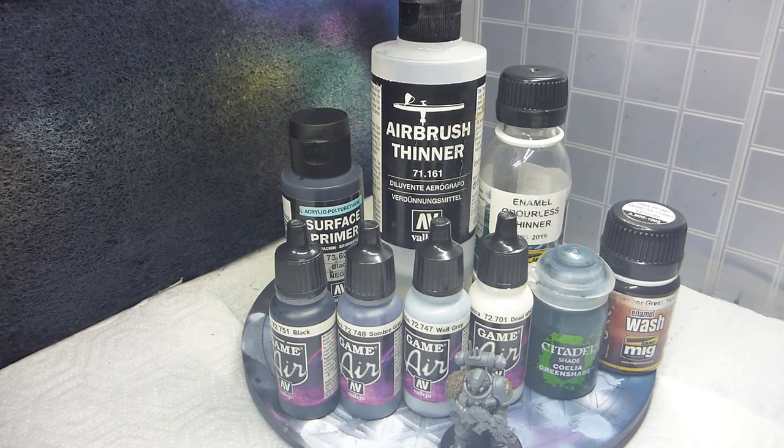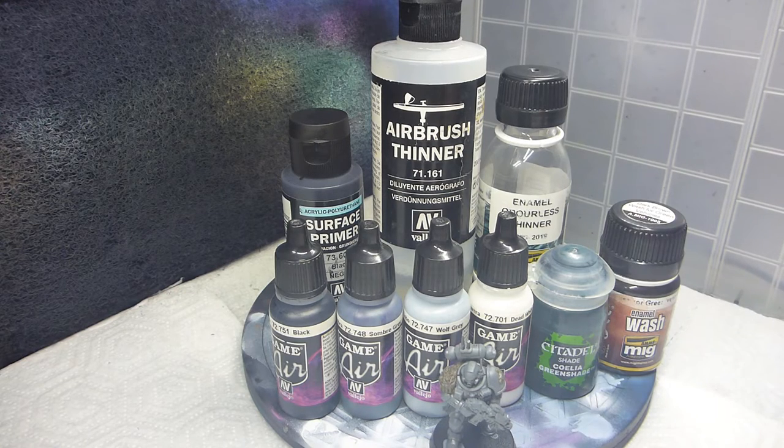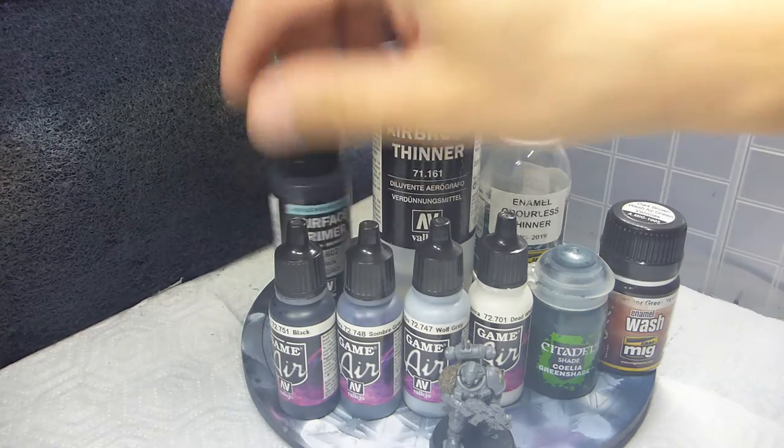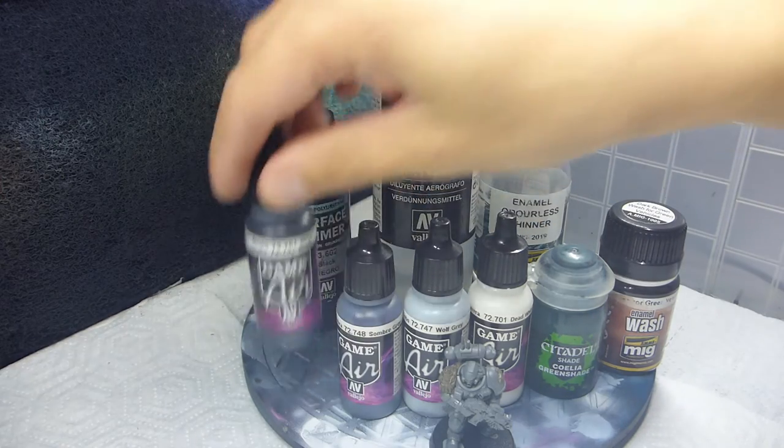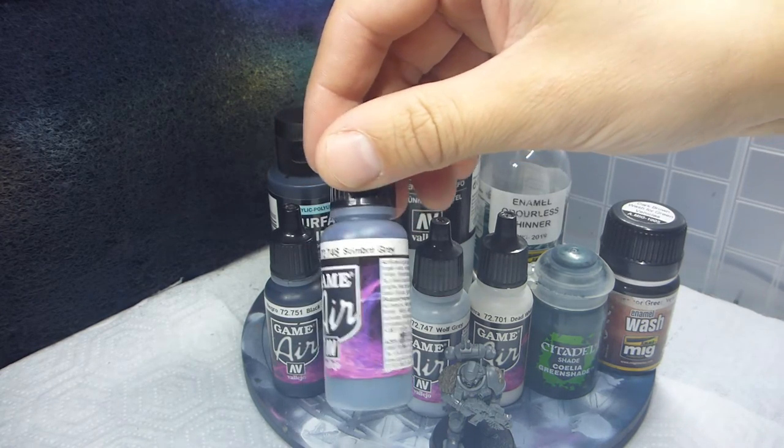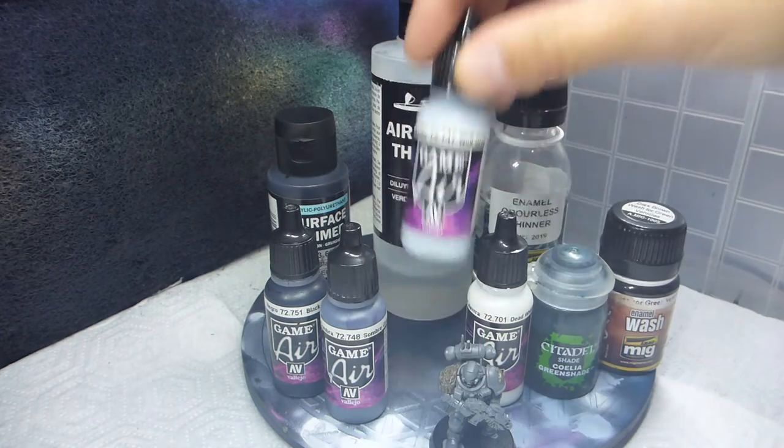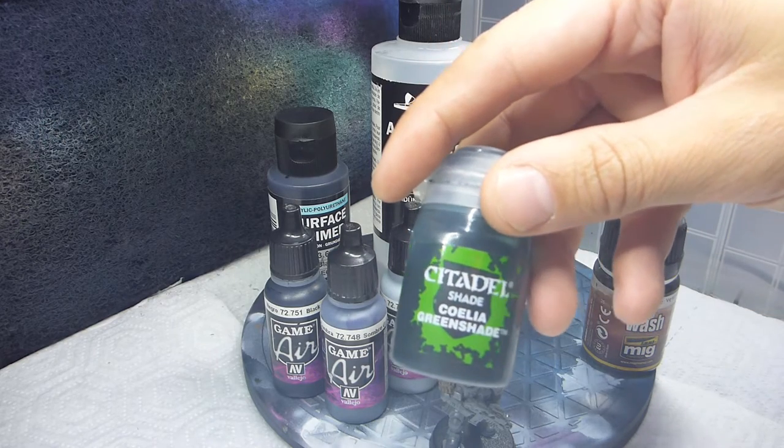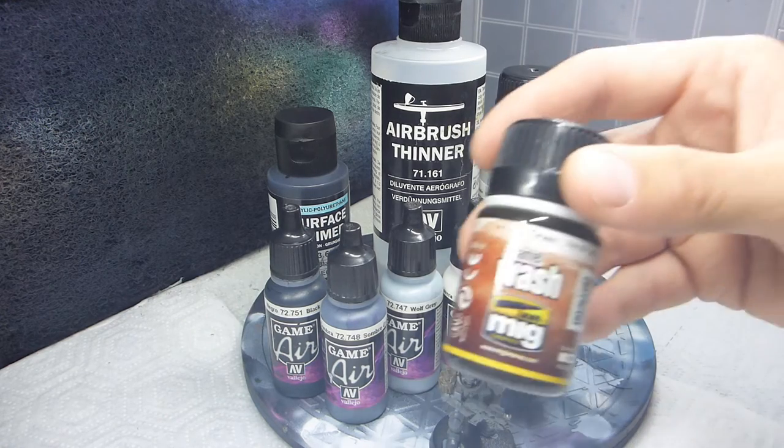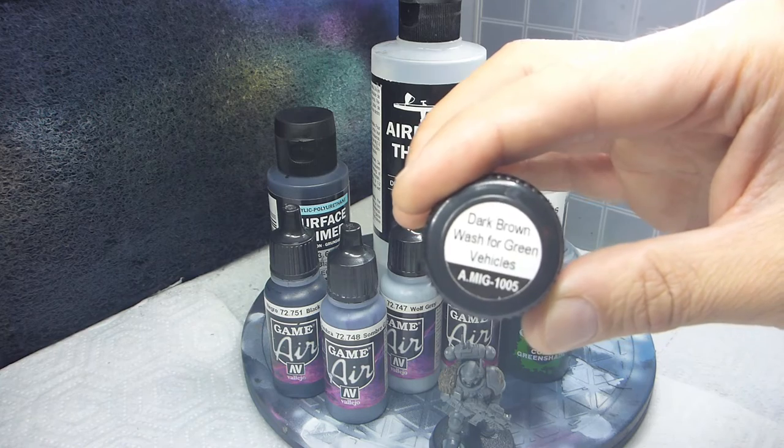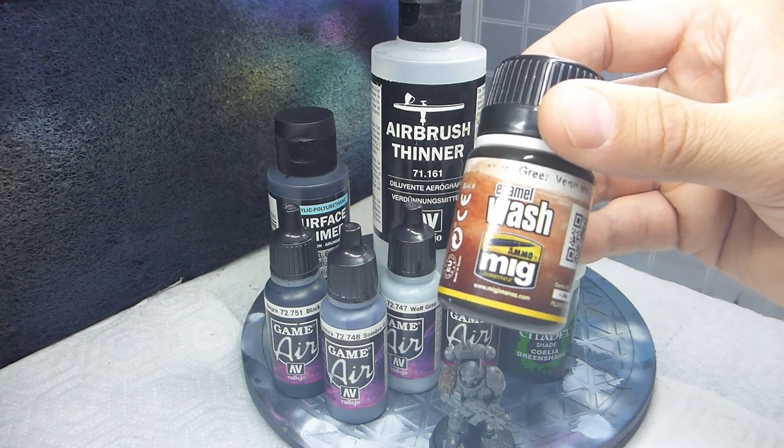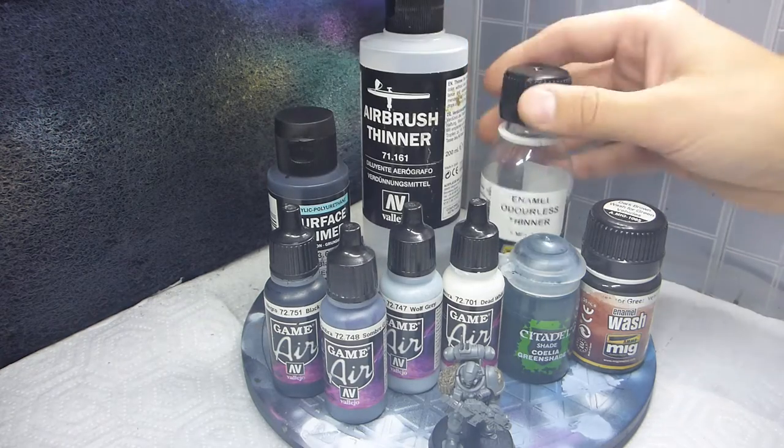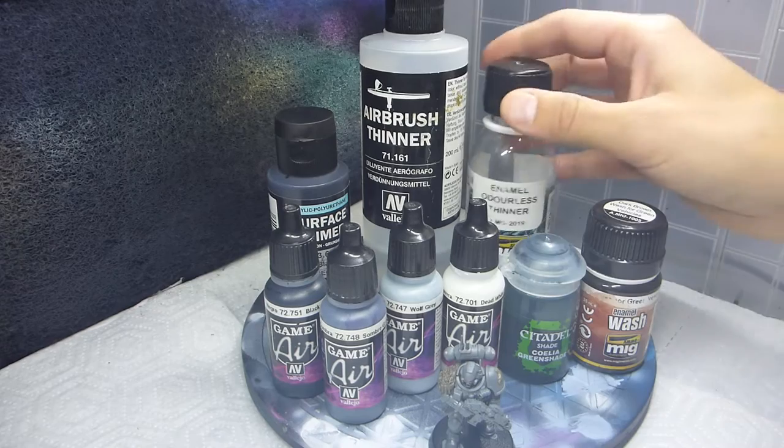These are the products I'm using when I paint the armor of the Space Wolves. I use a black surface primer, Vallejo Game Air Black, Vallejo Game Air Somber Gray, Wolf Gray, and Dead White. I also use Cyril Shade, Coelia Green Shade, and here is the secret weapon, an enamel wash by Ammo of Mig, a Dark Brown Wash, which I've started to enjoy a lot. I also use some airbrush thinner and an odorless enamel thinner as well.